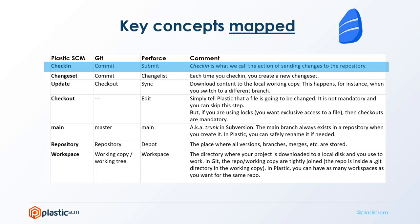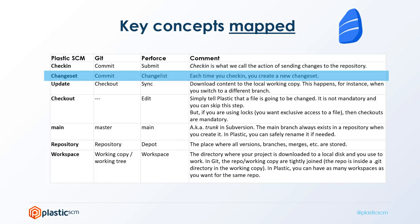Let's start with check-in. In Plastic SCM, we call check-in what Git calls commit or Perforce calls submit — it's just putting your files into version control. As a result of every check-in, we create what we call a changeset, also known as a change list in Perforce terms. It's basically the new change you just made — the group of files you just checked in.